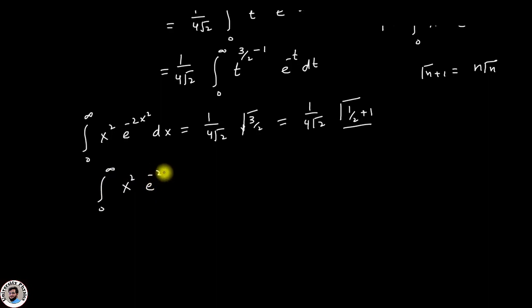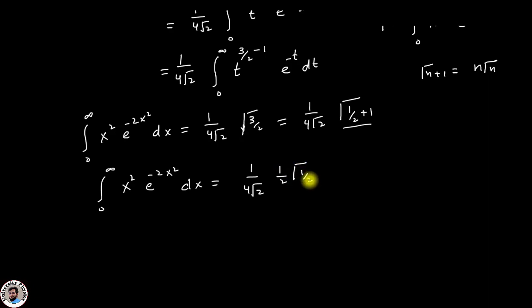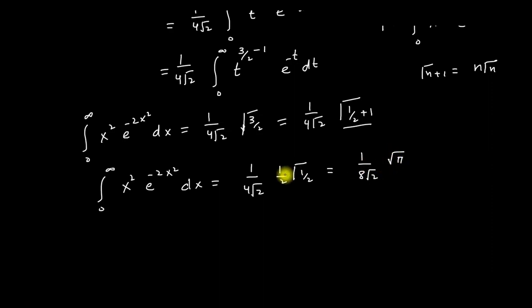So the integration from 0 to infinity of x squared e to the power minus 2x squared dx will become equal to 1 over 4 root 2 times half Gamma(1/2). This will simplify further. It can be written as 1 over 8 root 2 times Gamma(1/2), and we know that Gamma(1/2) equals root pi. So this given integration becomes equal to root pi over 8 root 2.